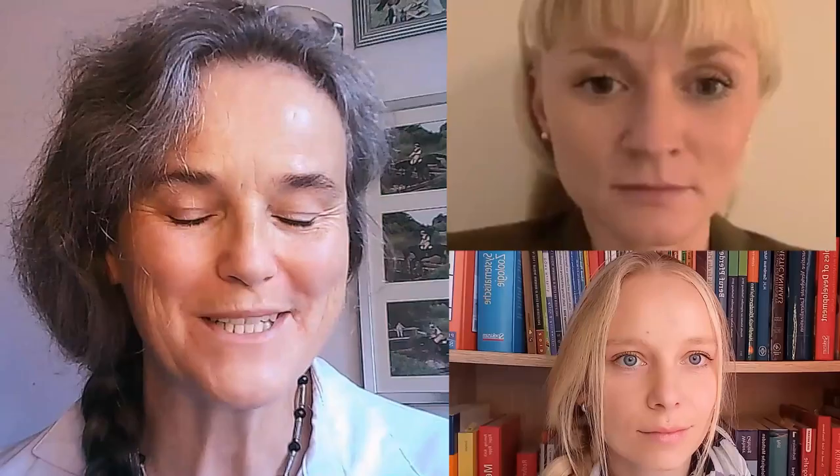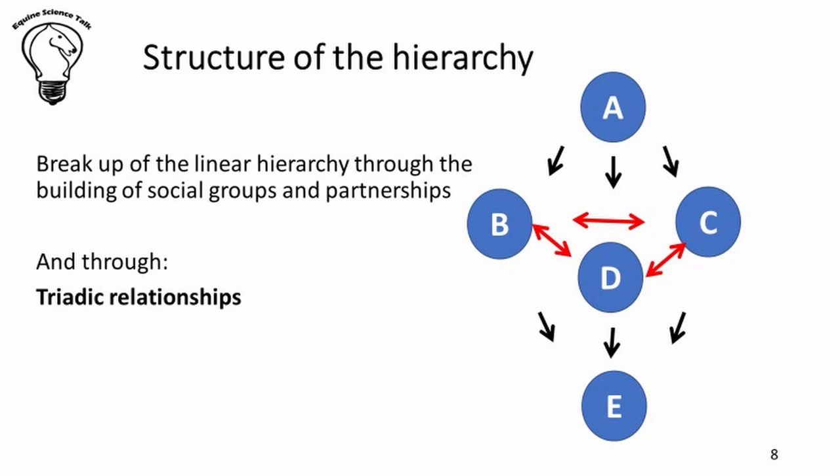It gets more complicated in some groups. There are so-called triadic relationships, as shown in this diagram, with three horses of roughly equal rank. These three would generally share food, water, and sleeping places. Maintaining these relationships is more demanding, as these three must also invest in their shared bonds. Again, it is entirely possible for three horses of very different rank to form these triadic relationships.